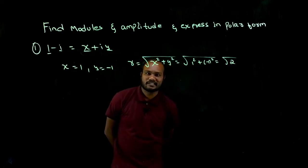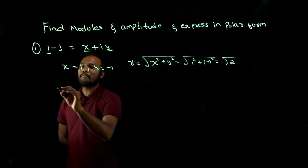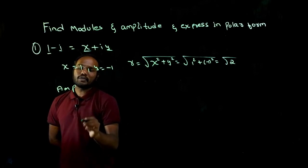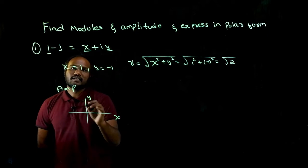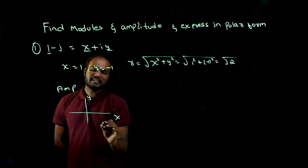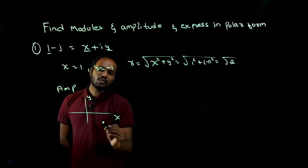We know the modulus. Now to find the amplitude, first we have to determine which quadrant it is. This is the x, this is y. It is positive x, negative y. This is in the fourth quadrant.